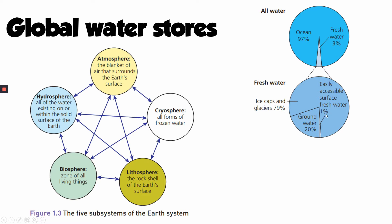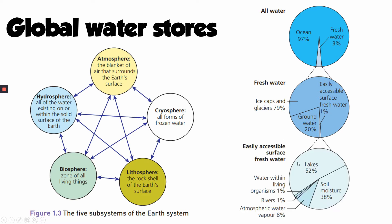If we look at that 1% and break it down further, there are two main stores of surface fresh water that dominate. Lakes account for over half of surface fresh water, soil moisture accounts for another 38%, and 8% is within the atmosphere. That leaves only 1% for rivers and 1% within the biosphere. Although we won't focus too much on the biosphere, atmospheric water plays a really important part even though it's only 8% of that surface fresh water.